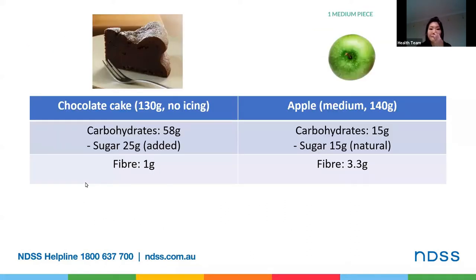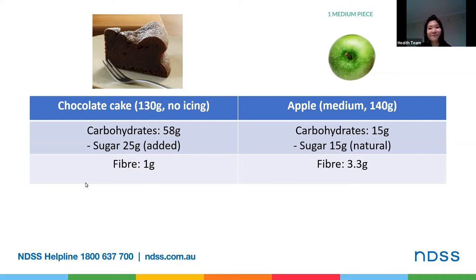Now let's compare these two examples. We have a slice of chocolate cake with no icing on the left, while on the right we have a medium-sized apple. They're both carbohydrates, but have very different nutrition profiles. Although both foods are grouped as carbohydrate-rich foods, and many might say they're both high in sugar, if you take a closer look, they're actually quite different.